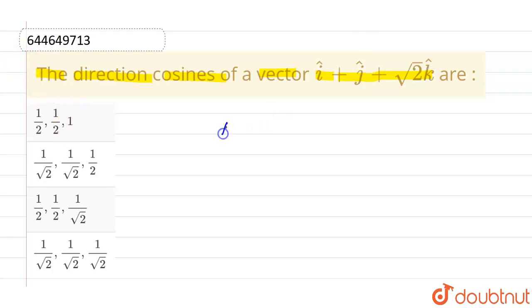So the given vector, let's say this is a vector and this is given as i cap plus j cap plus root 2 k cap. Now we know that whatever are the coefficients of i, j and k cap are nothing but direction ratios. So direction ratios of a vector are 1, 1 and root 2.